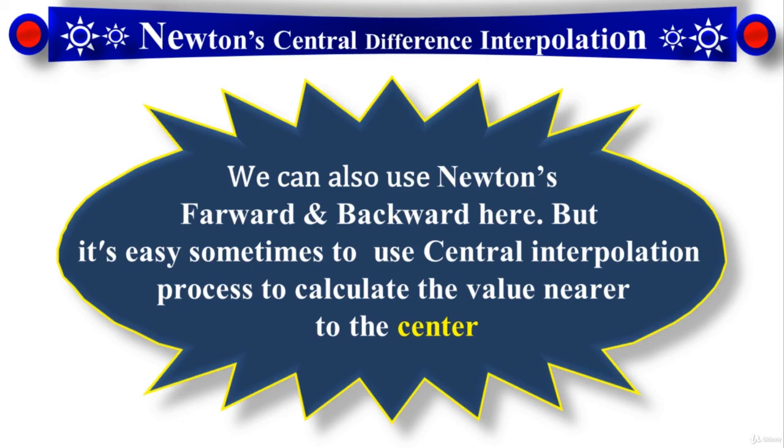This is one point, and the other point from here is clear: why we introduce central interpolation process. In the upcoming lecture you will see that its table is different compared to what we have for forward and backward. Its formula is different. Let me show you in the next lecture.